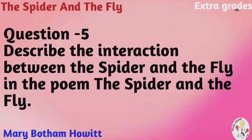The poem progresses through a conversation between a spider and a fly. Interestingly, the spider is male and the fly is female. The fly is aware of the dangers of entering the spider's web — it knows that those who enter the spider's parlor never come out. The spider uses several temptations to attract the fly, first talking about its comfortable bed which will help the fly to rest.